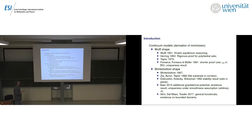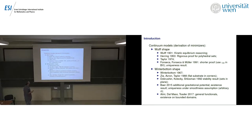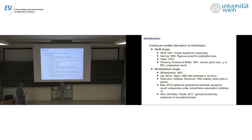Let me give an overview of the literature. The first paper recognizing the Wulff shape as the minimizer was by Wulff. The first rigorous proof I found was by Herring in 1953 for polyhedral sets, then by Taylor in 1974 using more geometric arguments, and then Fonseca in 1991 put the proofs in the framework of BV, making them more accessible to analysts. Fonseca and Müller addressed uniqueness of the Wulff shape. The Winterbottom shape was introduced, I believe, in the first paper from 1967.